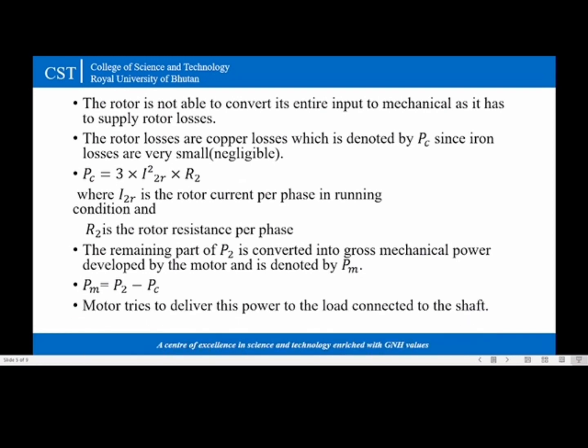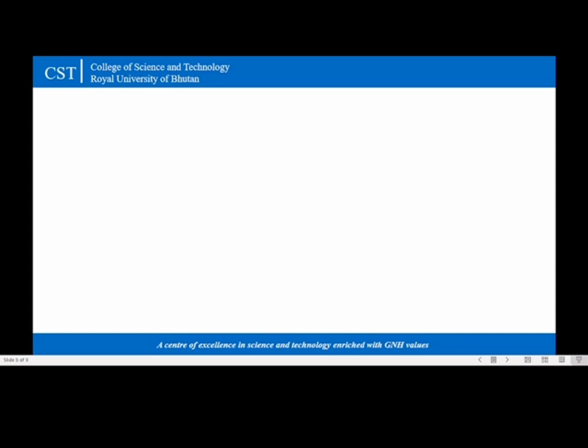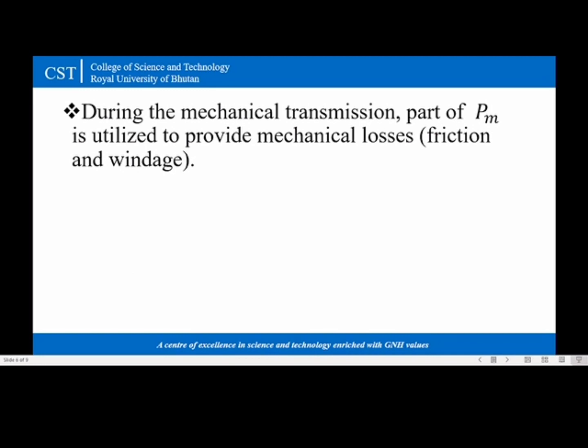Now this power motor tries to deliver to the load connected to the shaft but during this mechanical transmission part of PM is utilized to provide mechanical losses like friction and windage. And finally the power is available to the load at the shaft. This is called net output of the motor denoted as Pout. This is also called shaft power.